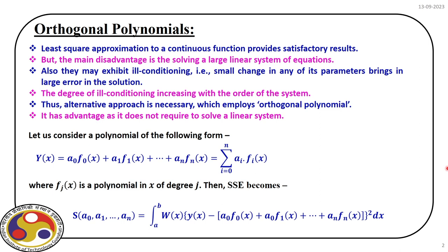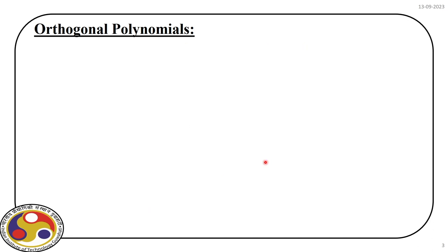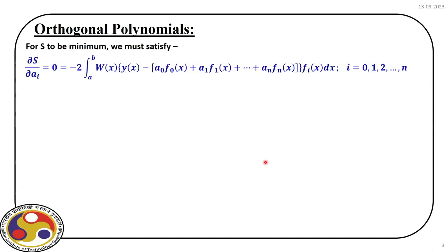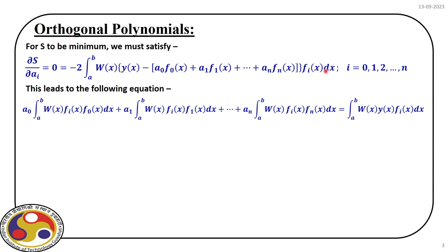Using this expression, let us see how we can cast the functional forms φᵢ(x) to develop the orthogonal polynomial. If we minimize capital S, we differentiate with respect to aᵢ and equate to zero. On the right-hand side we get an expression, and by changing i we develop a set of equations. We ultimately get an expression slightly modified from the earlier case where φ0(x), φ1(x) had a particular form, but now it is in a more generic form.